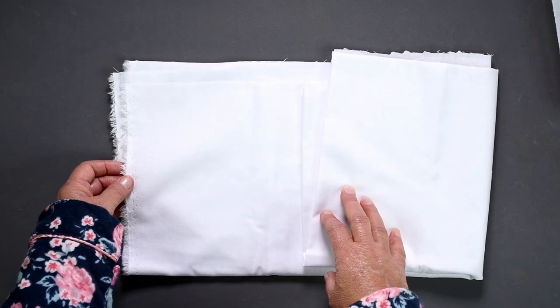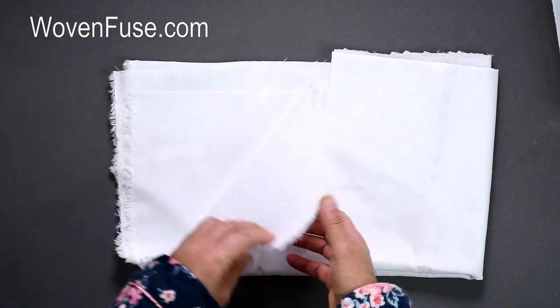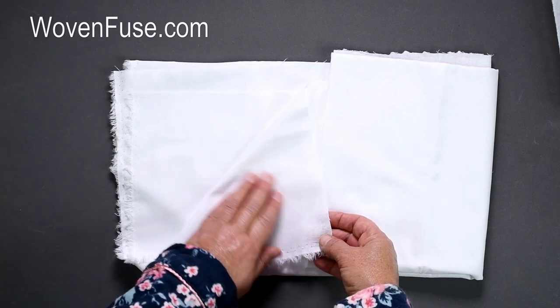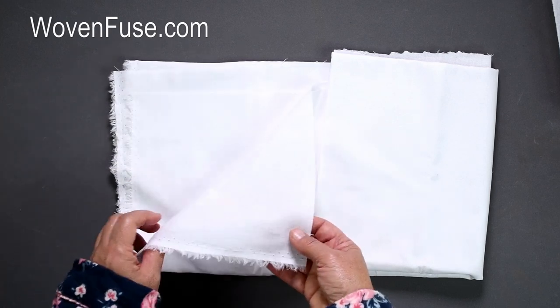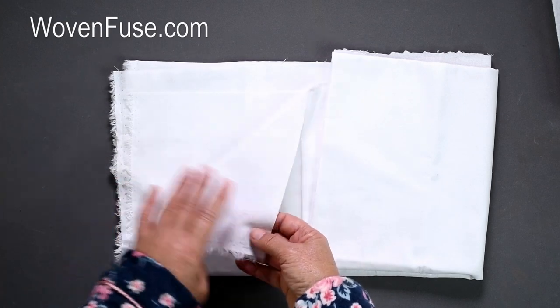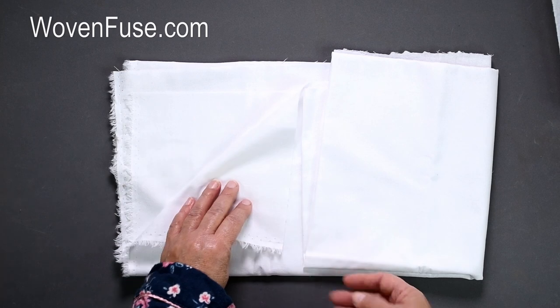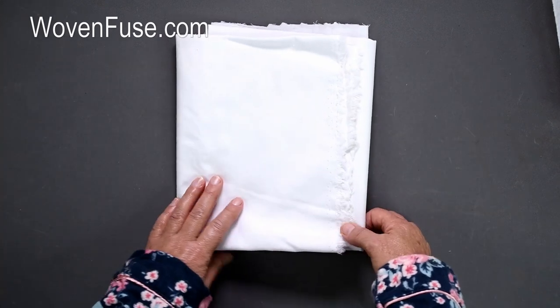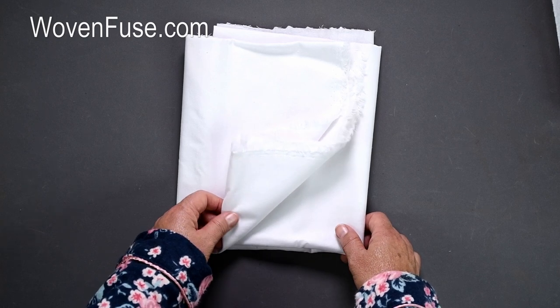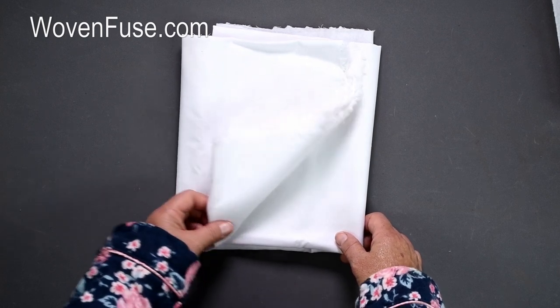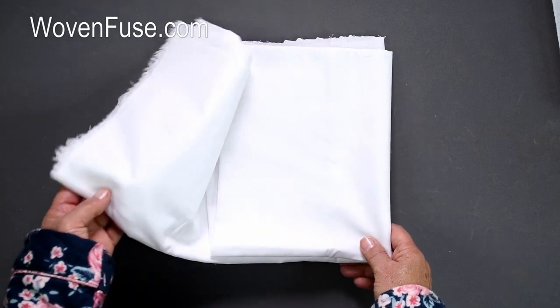The woven interfacing that I use is fusible. You can tell which side is the glue side because it feels rough to touch and in some cases some interfacings will be shiny on the glue side. You can also use sew-in interfacing and in some cases I do prefer a sew-in and when I use a sew-in I simply baste the outer edges of the fabric and interfacing together.